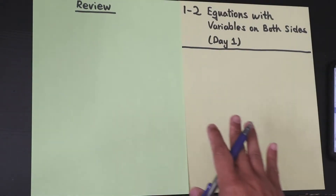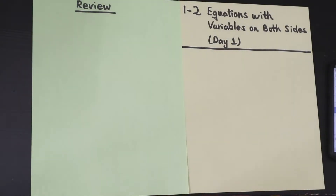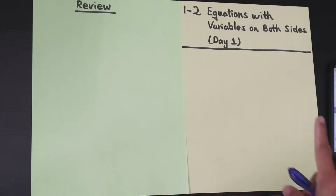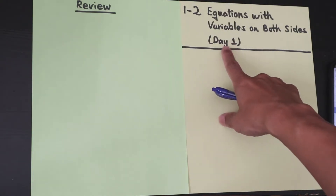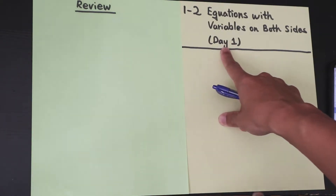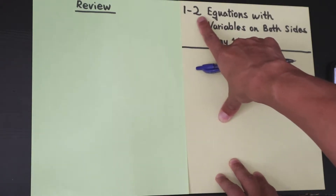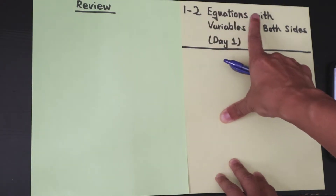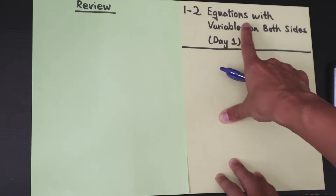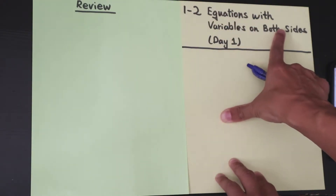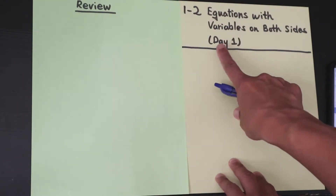Good morning, everybody. We are continuing with topic 1 in Integrated Math 1. Today we're going to learn a new lesson titled 1-2, Equations with Variables on Both Sides.